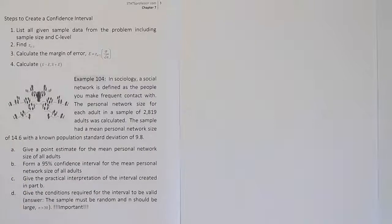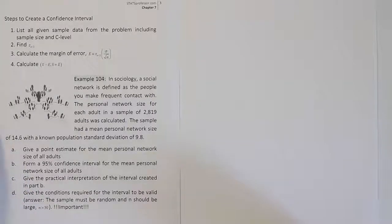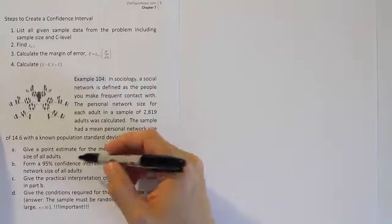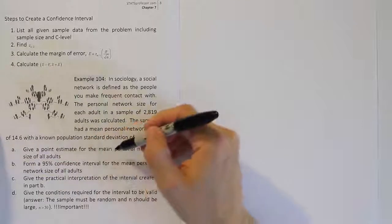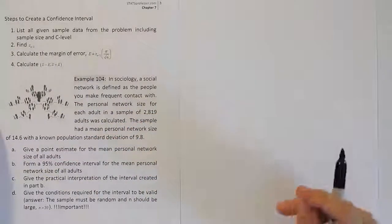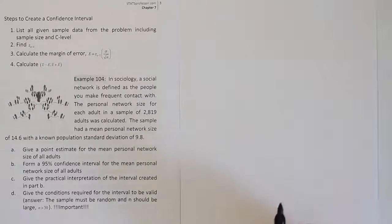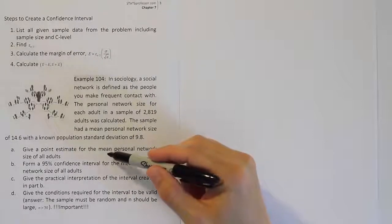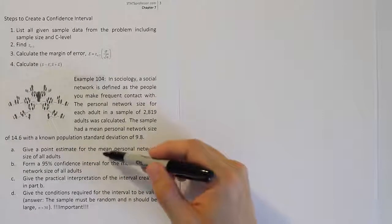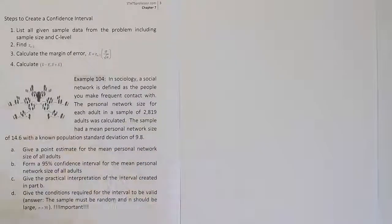Let's take a look at this example 104 from the notes. Recognize first that they're asking us to perform a confidence interval in Part B. In Part A, they want to know the point estimate for the mean personal network size. A point estimate is just a single number that's used to estimate the thing you're interested in, which is the mean personal network size.